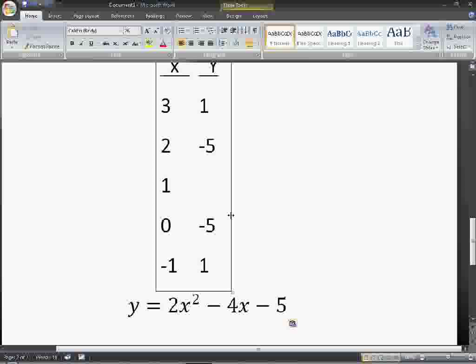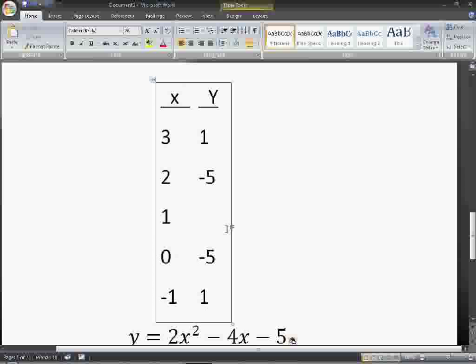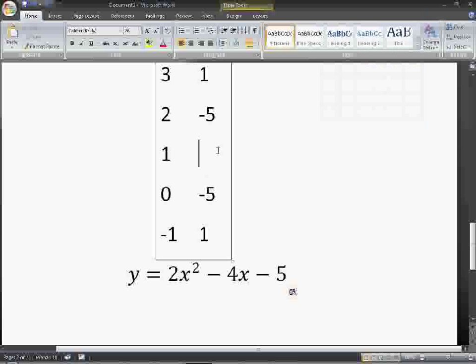So, 1. This is going to be your middle term, or your middle x value, which should be about there. So, let's run 1 through this. 1 times 1 is 1. 1 times 2 is 2, minus 4, minus 5, and you should get negative 7. So, 1 is negative 7.